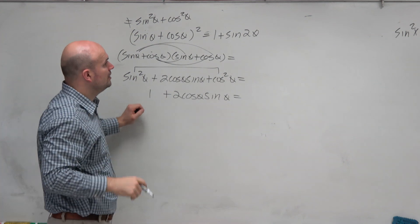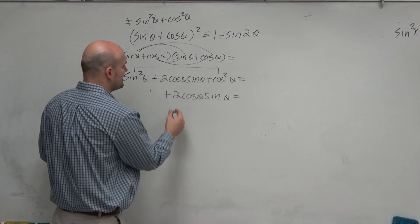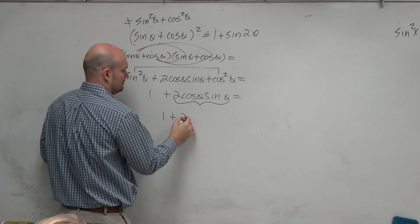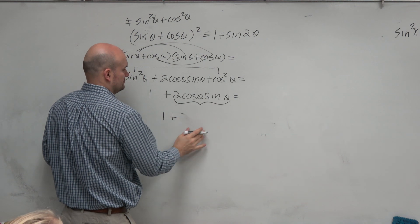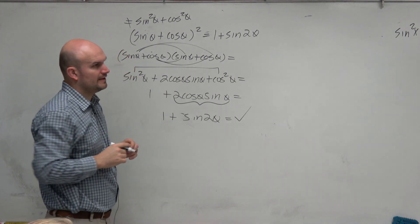Now again, we want this to equal 1 plus sine of 2 theta. So we have the 1, and then we recognize this is actually our double angle formula. And there you go.